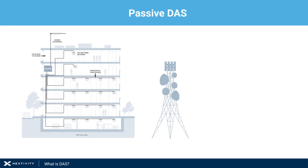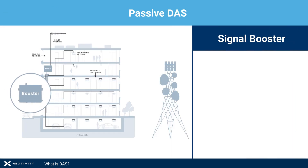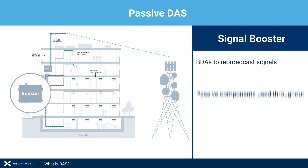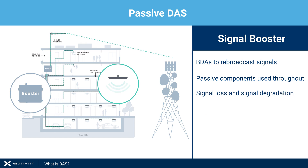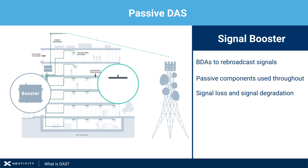Within the off-air DAS category, the first type is passive DAS, which uses bi-directional amplifiers, or BDAs, to rebroadcast signals. These repeaters use passive components throughout, resulting in noticeable signal loss and degradation. The noisy signals they produce force operators and regulators to limit their uplink power to avoid damaging the network, which reduces their effectiveness.